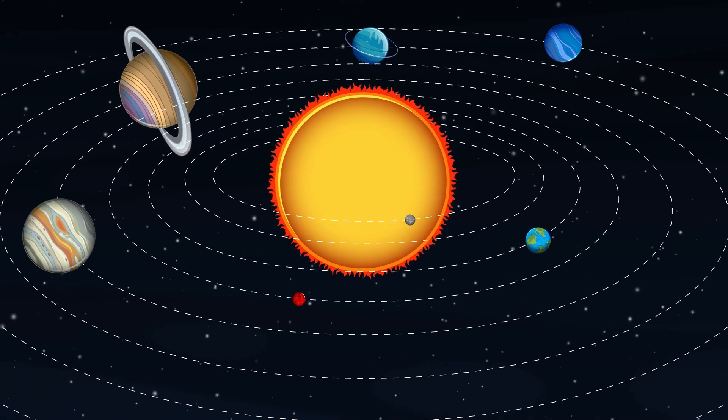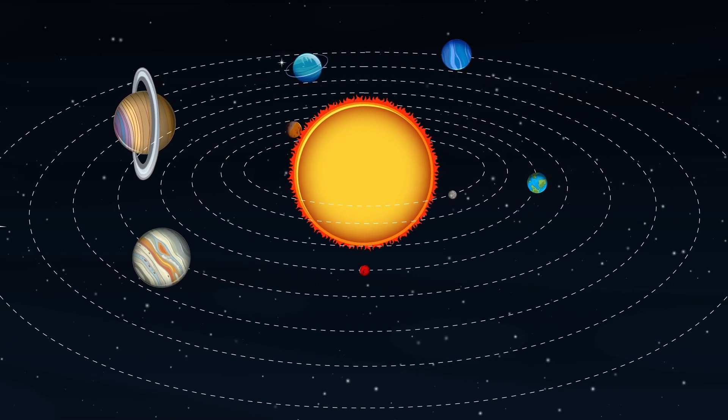In November 2018, Voyager 2 crossed the heliopause. This is the region where the solar wind slows down and the Sun's influence begins to fade.